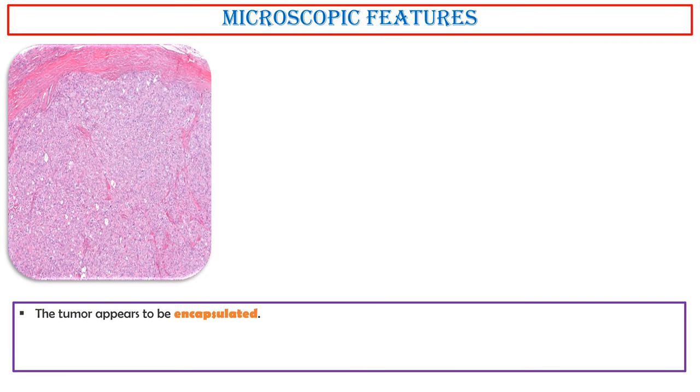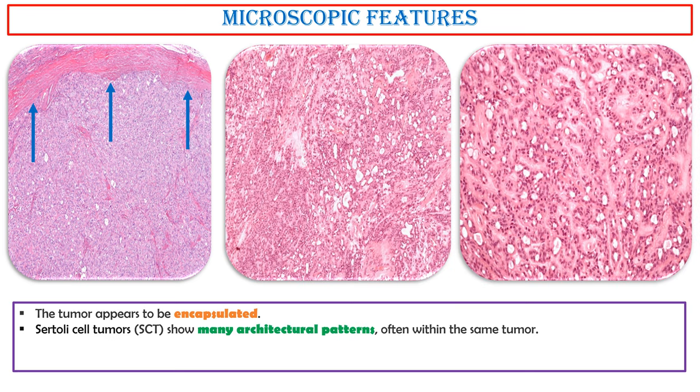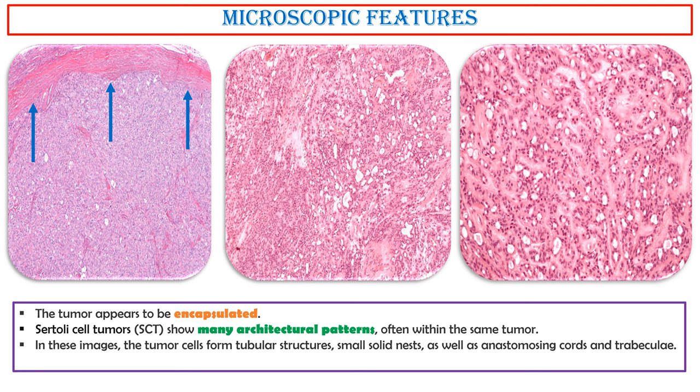The tumor appears to be encapsulated. Sertoli cell tumors show many architectural patterns, often within the same tumor. In these images, the tumor cells form tubular structures, small solid nests, as well as anastomosing cords and trabeculae. There is a moderate amount of hyalinized stroma around the tubules.